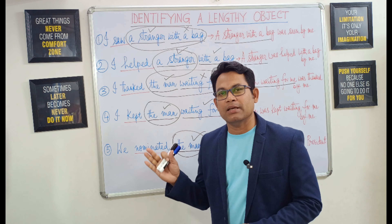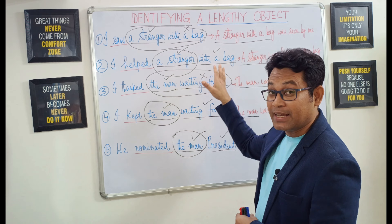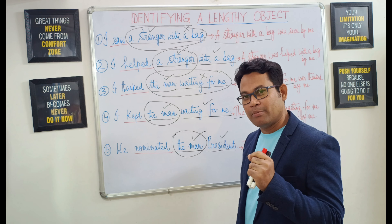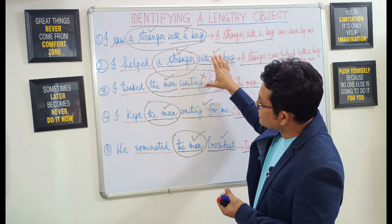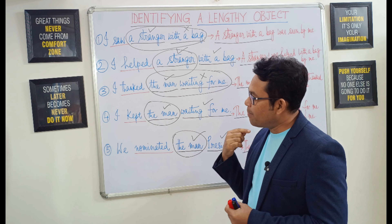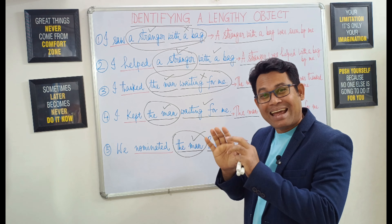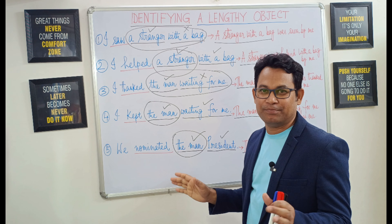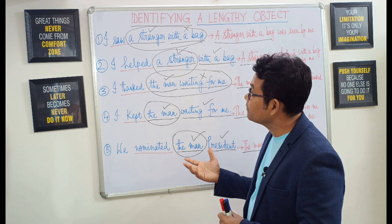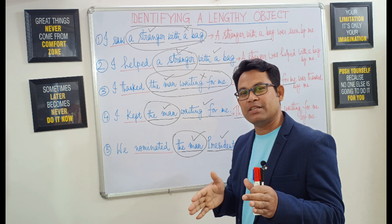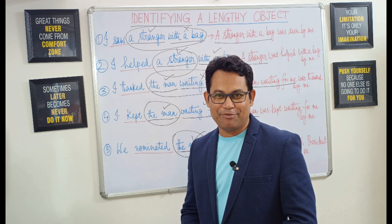That's it about this video today. My next video will be on voice and tense as well, with regard to object — specifically I'll be discussing how to apply the rule of omission. Whenever we get a certain type of sentence, there is a particular rule applying which we'll be able to see how a particular word cannot be an object at all. That will make things easier for us to find out the object in a given sentence more accurately and easily. See you soon in the next video.